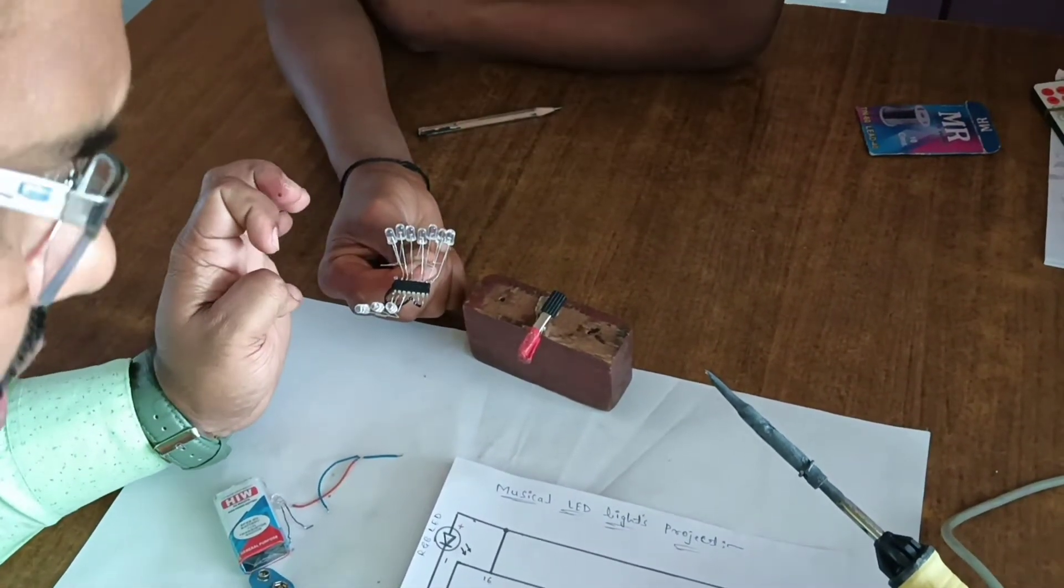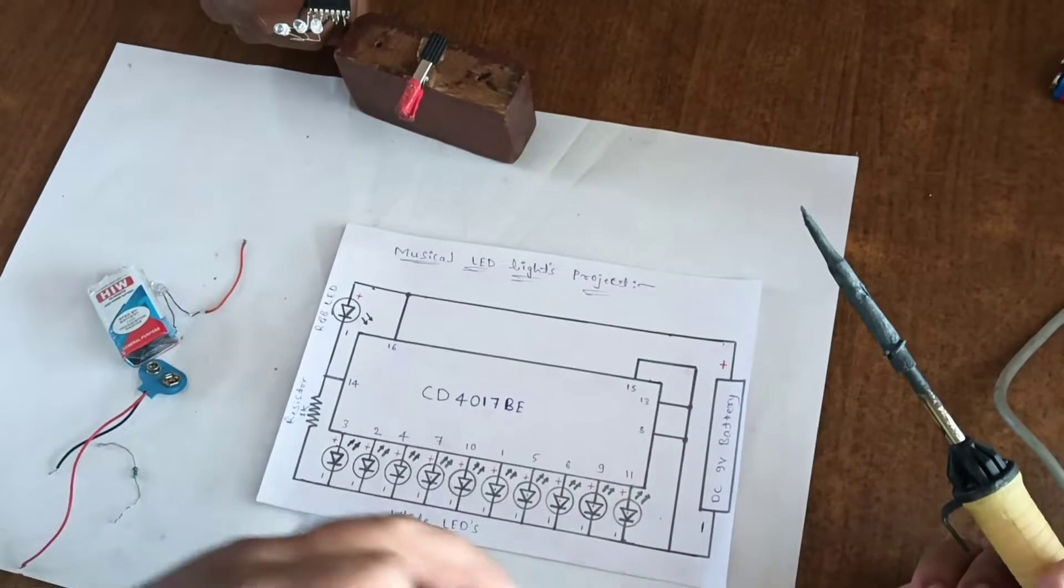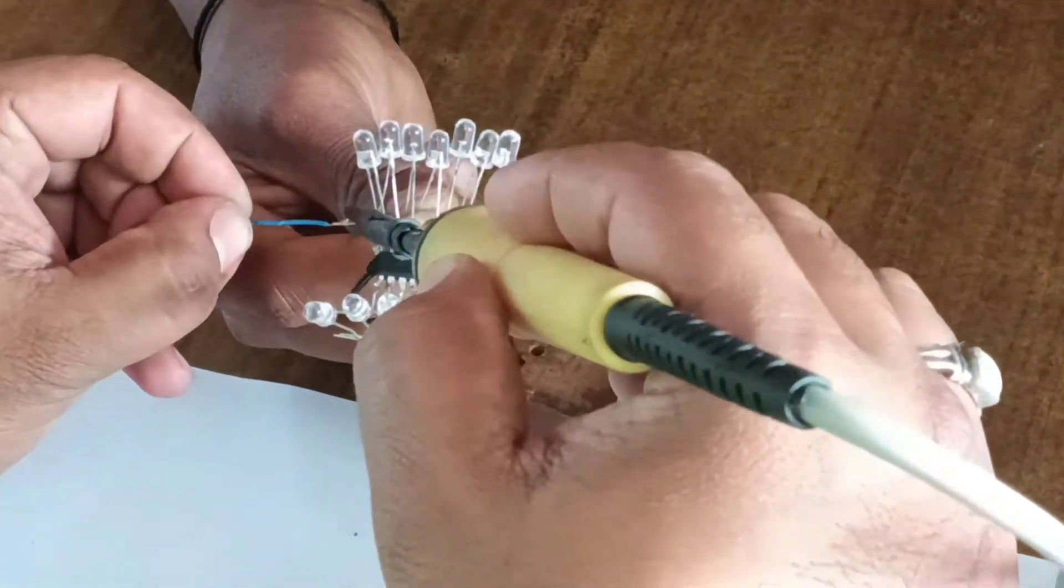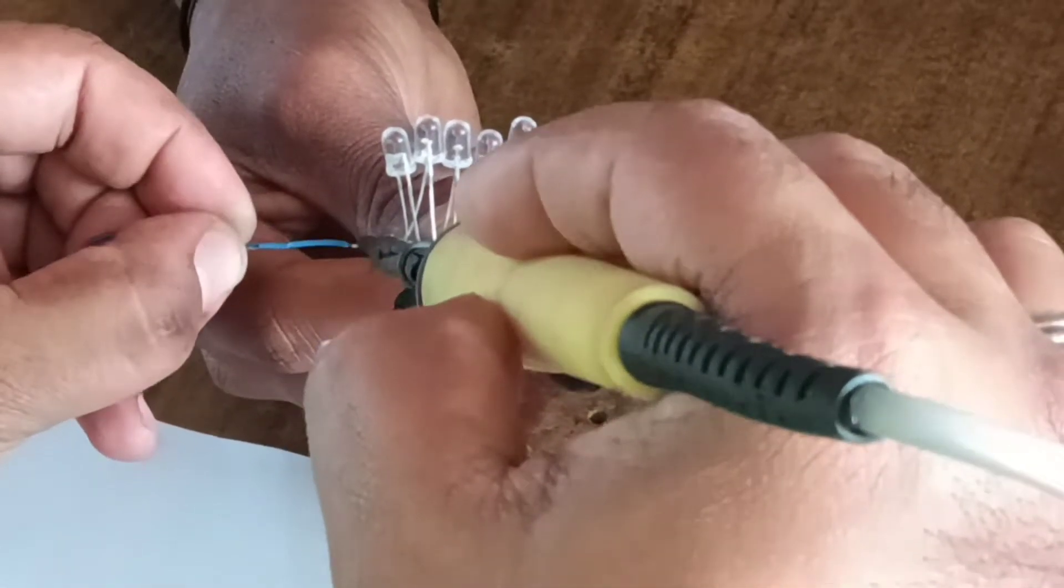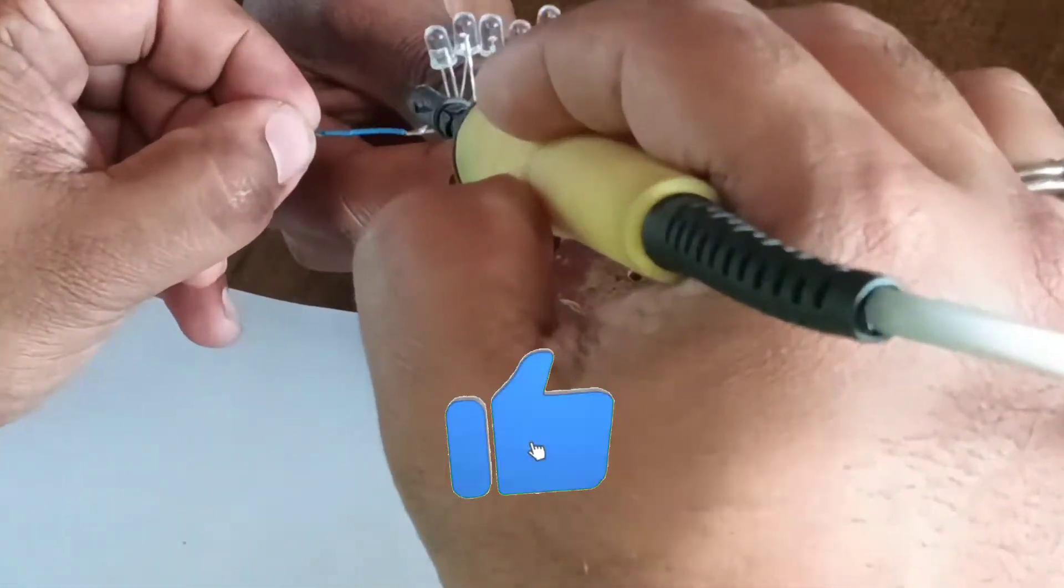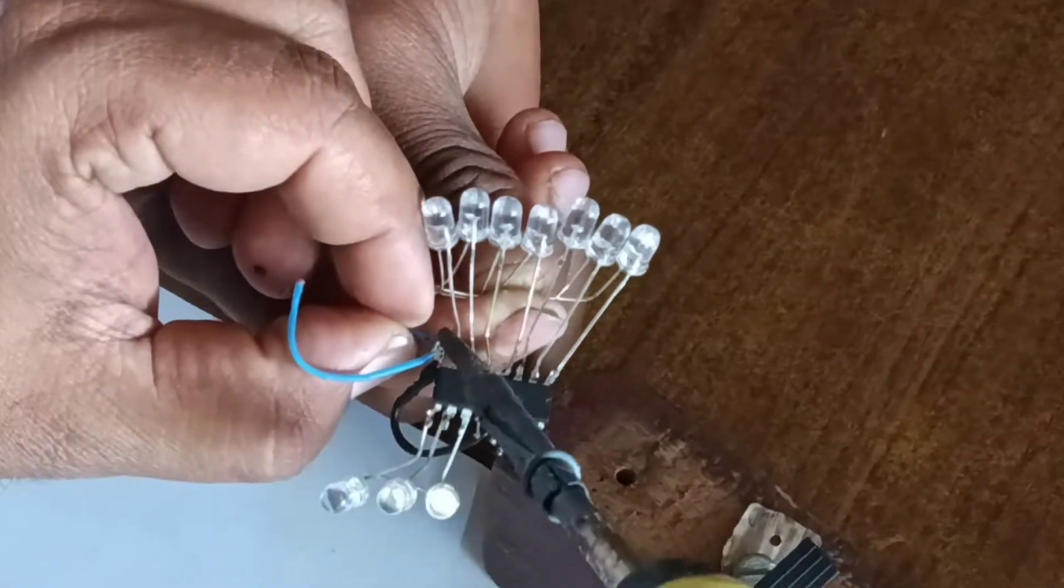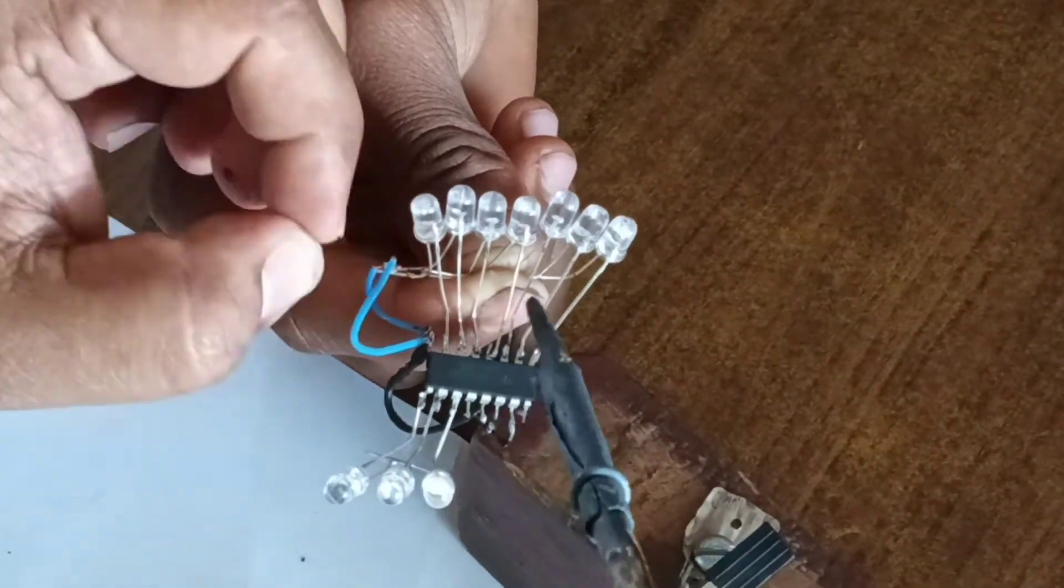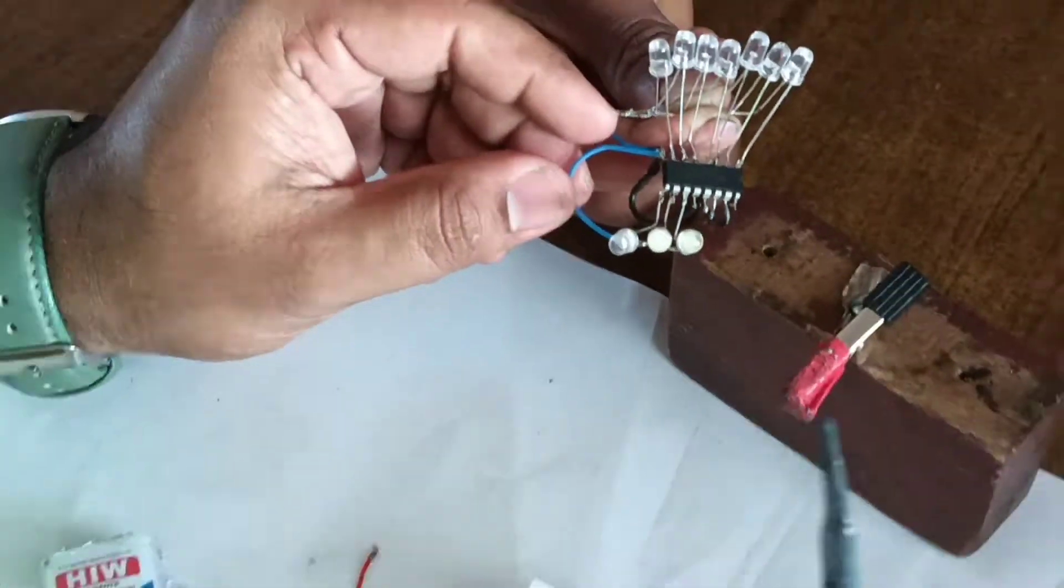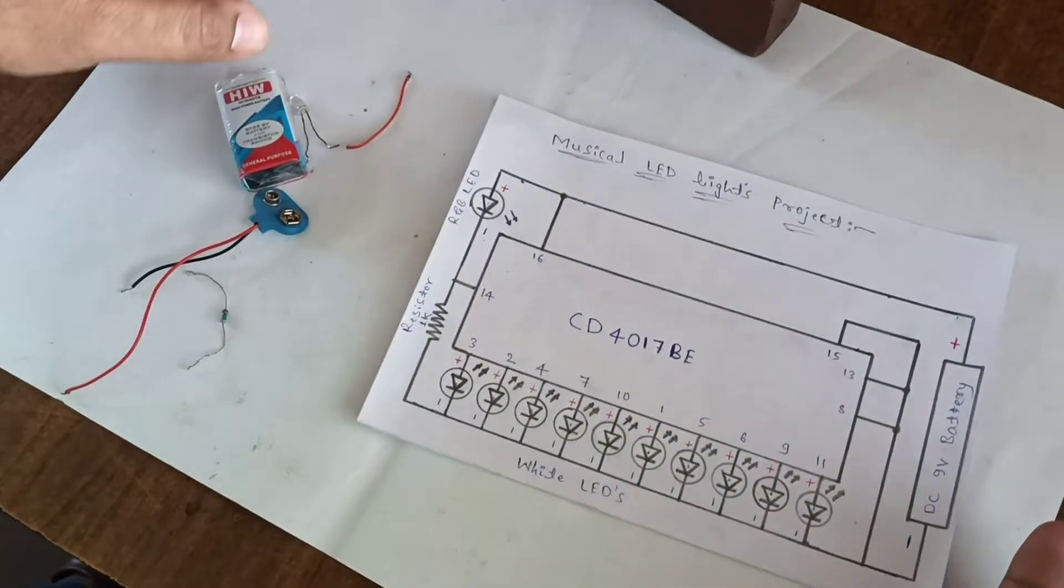Pin number 15 and 13 are shorted. Three terminals are shorted. Pin number 8 to negative. Now this connection is over 15, 13, 8 and from 8 to LED negatives.